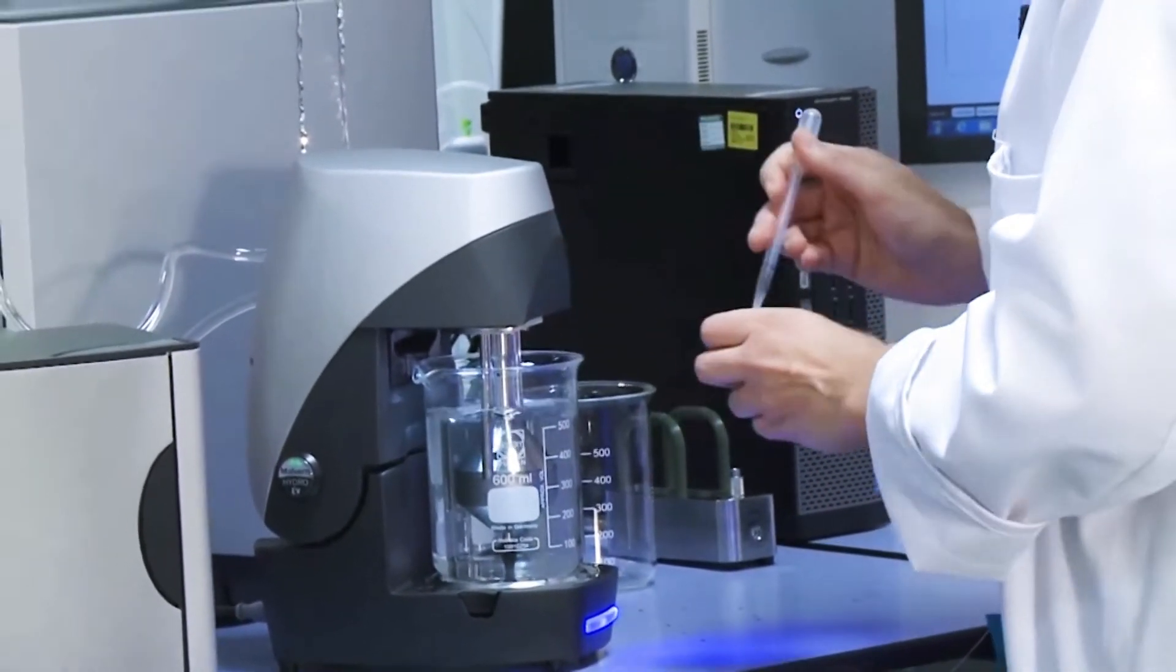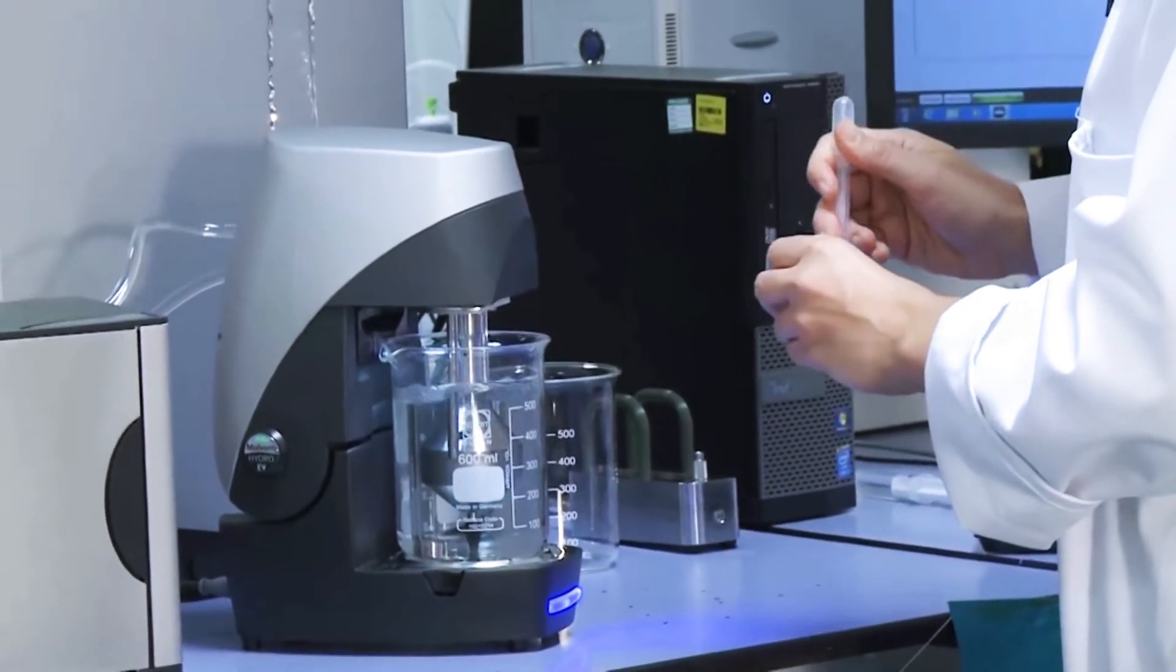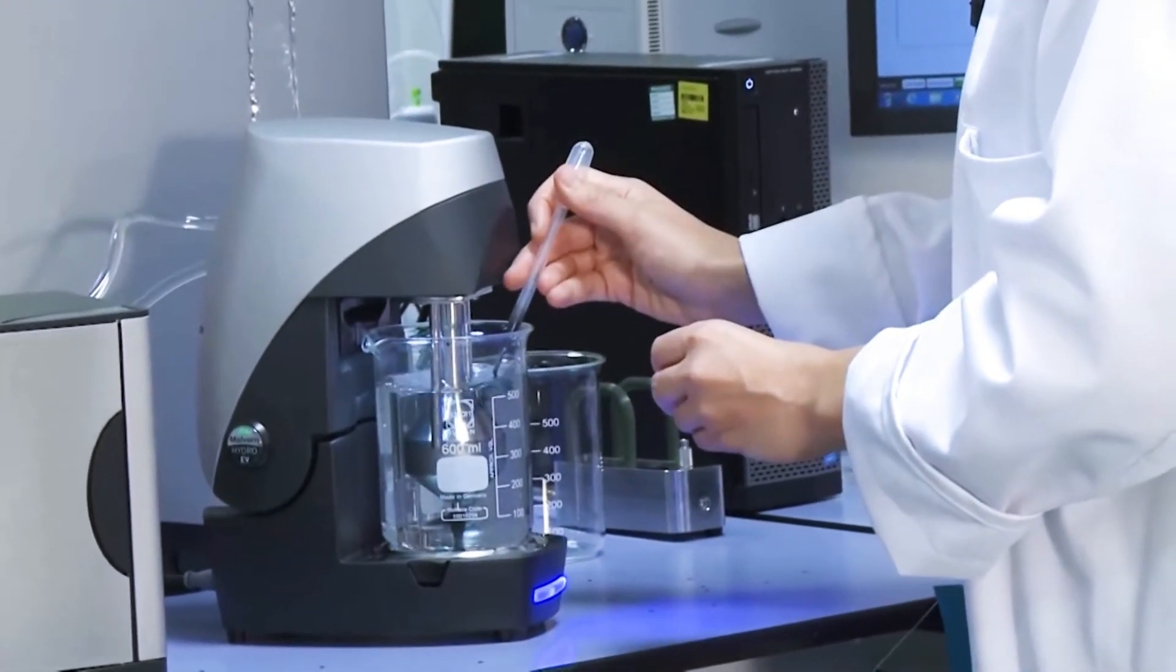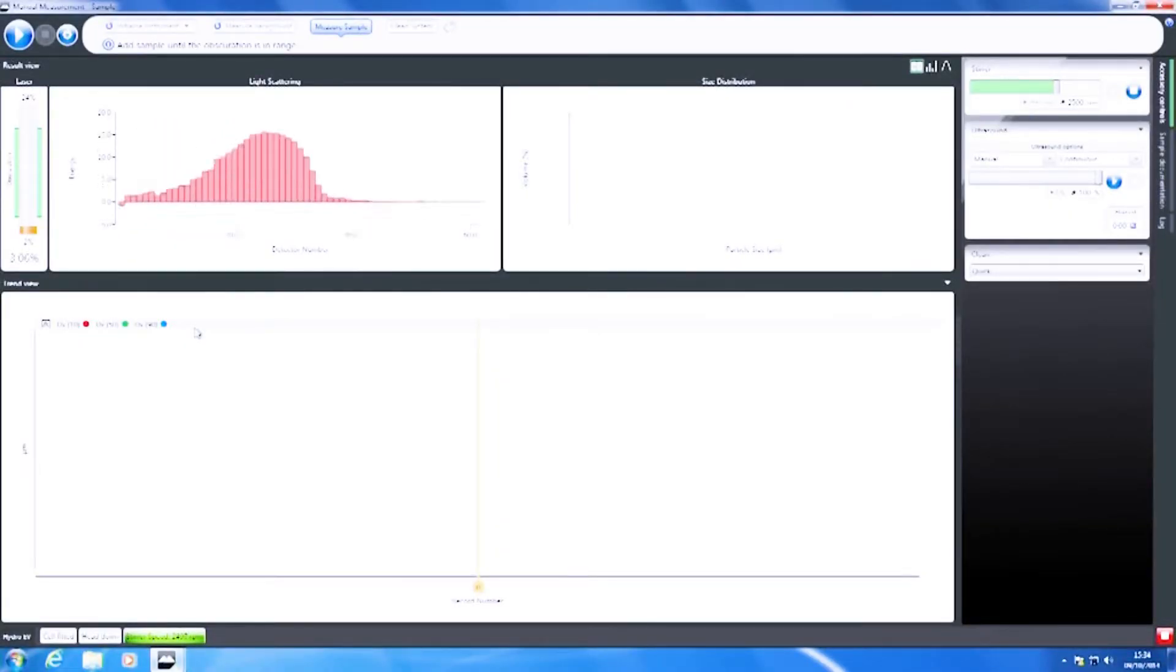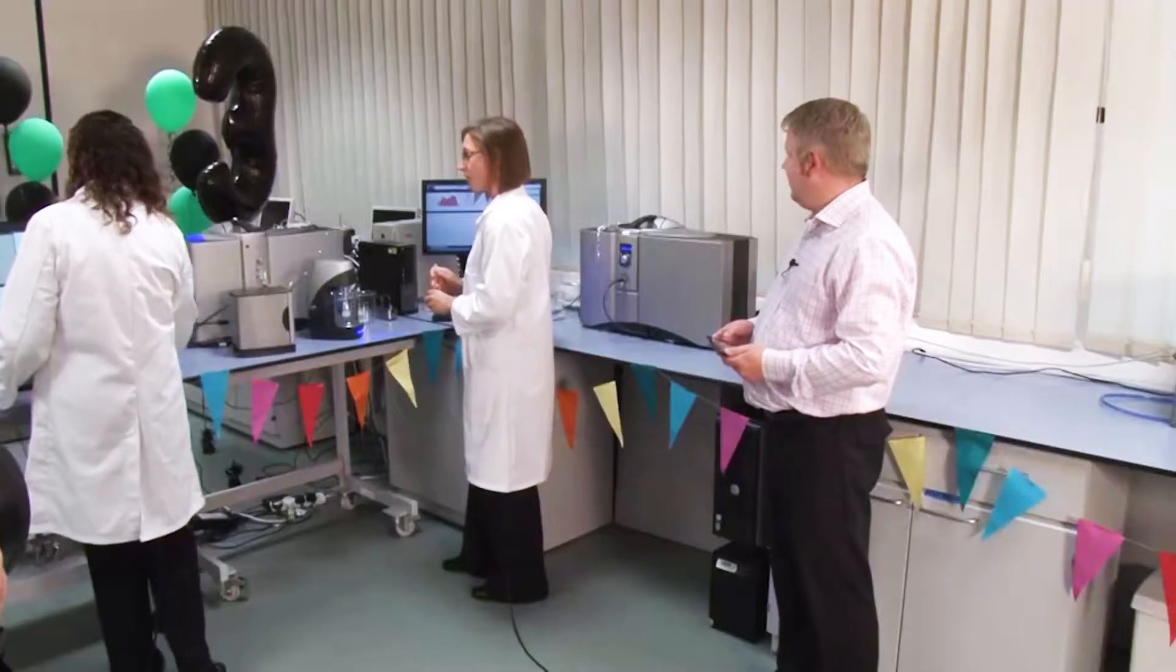So I'm just adding some sample in here and we'll have a look at what obscuration we get up to. So I'll just pop a little bit more sample in there. So when I look at this I think we've got some large particles present. What do you see on the HydraSight?